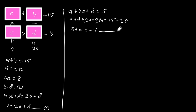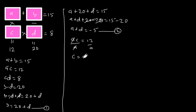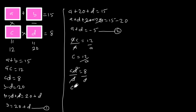From the equation AC equals 12, let's make C the subject by dividing each side by A, so C is equal to 12 over A. Then from the equation CD equals 8, let's divide each side by D, so C is equal to 8 over D.